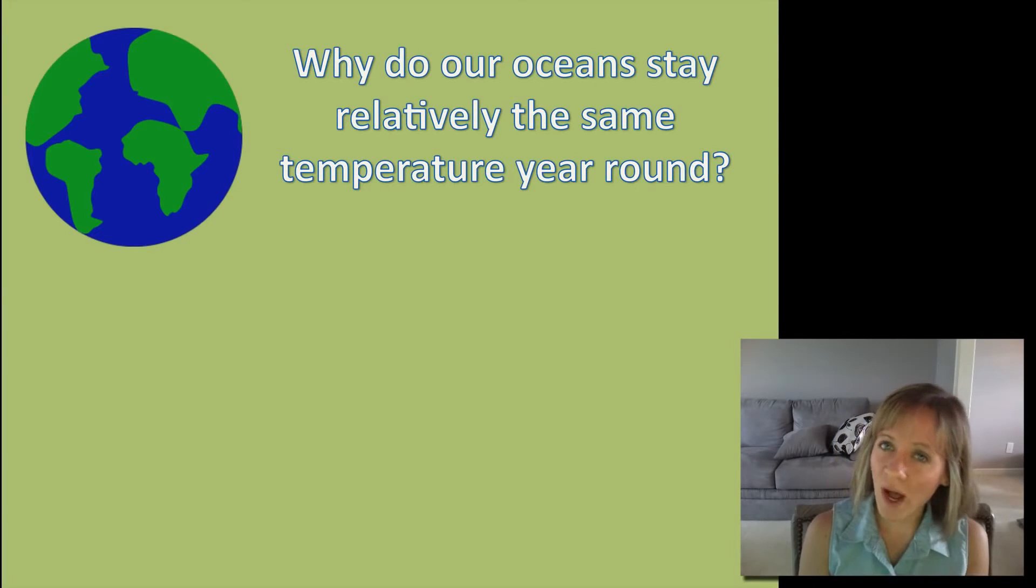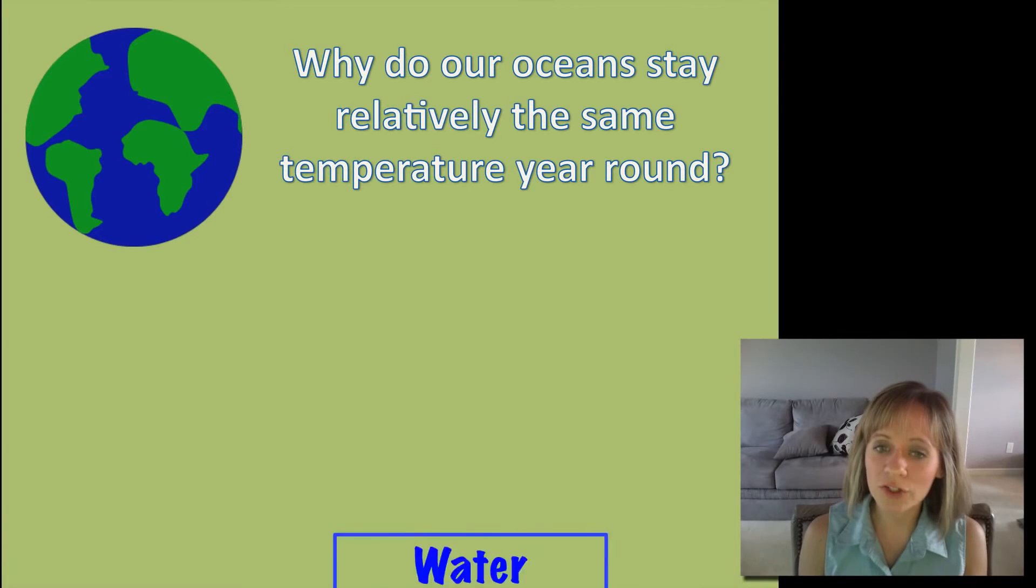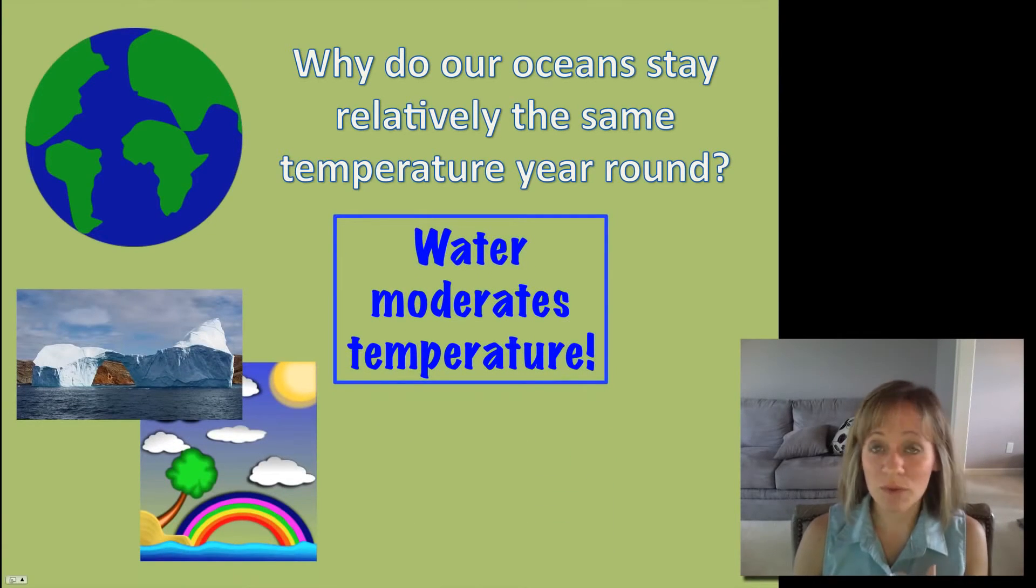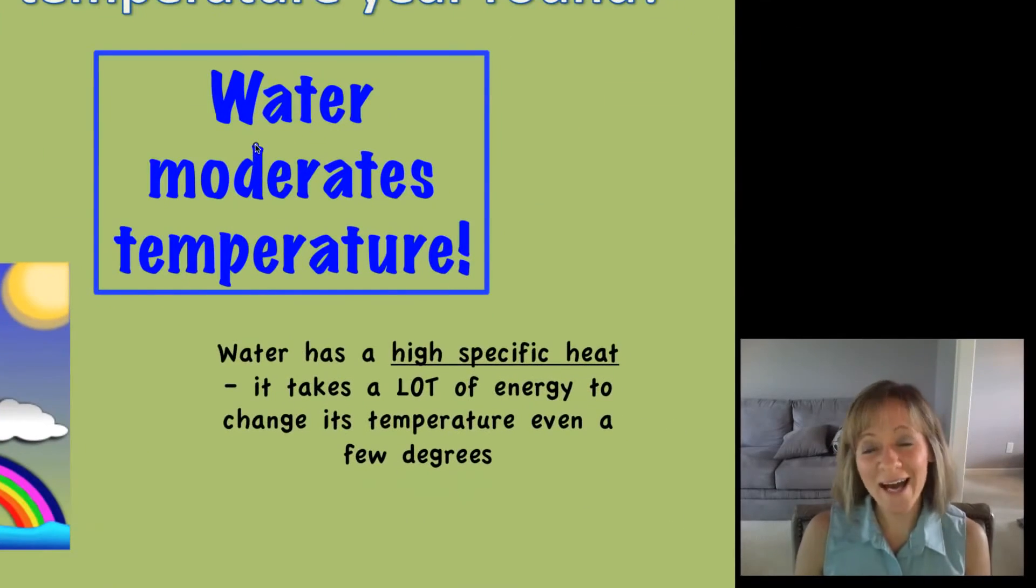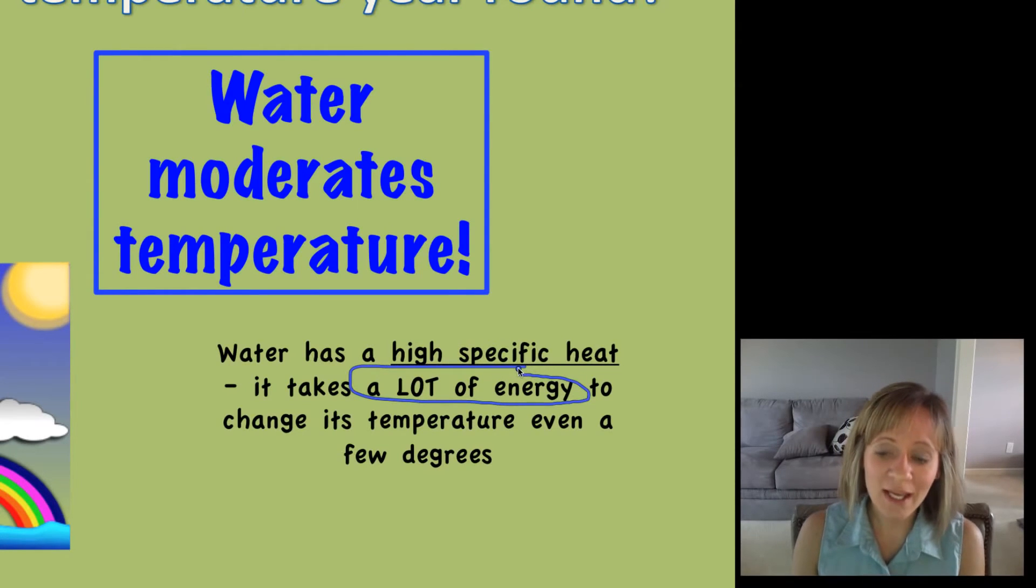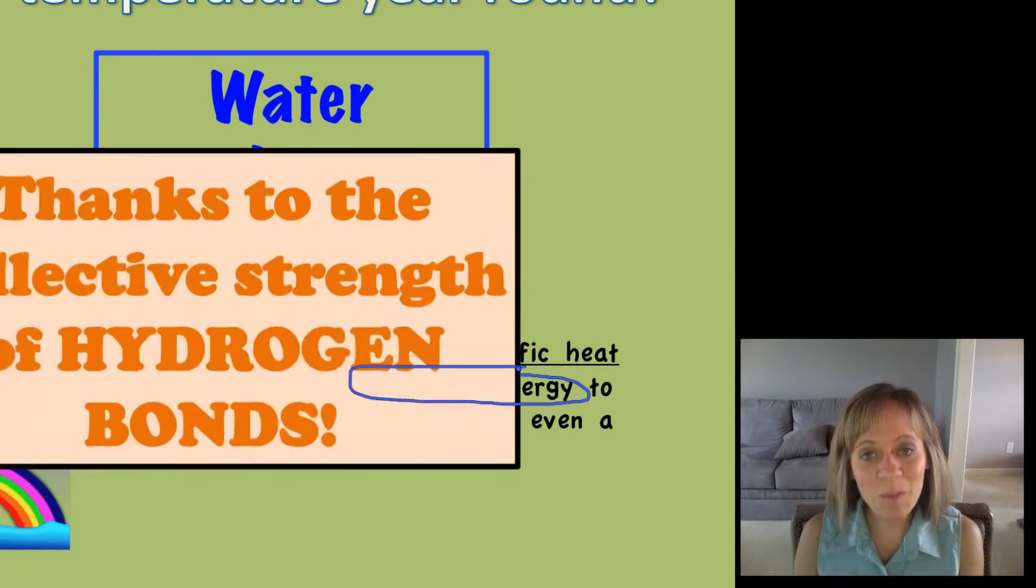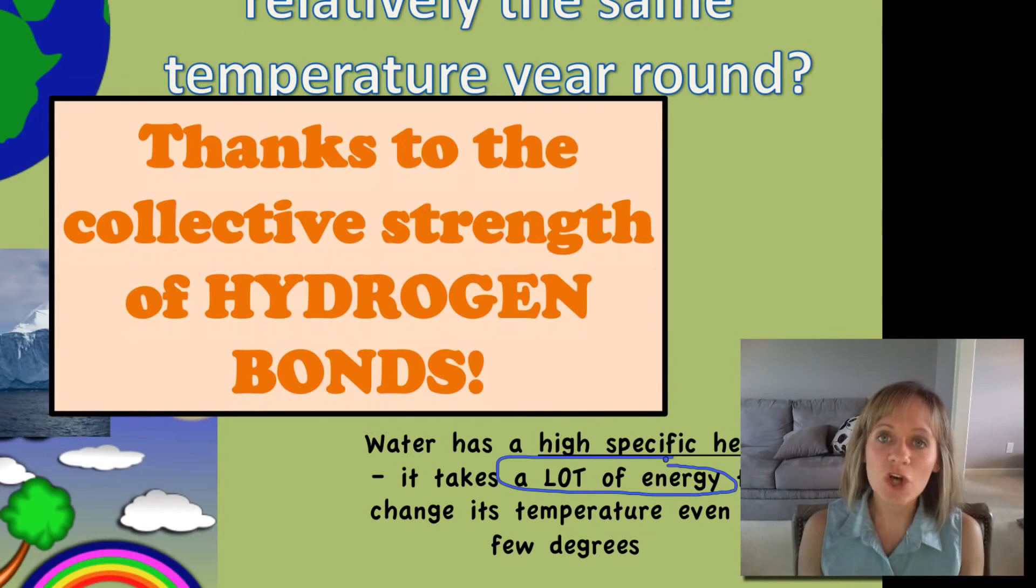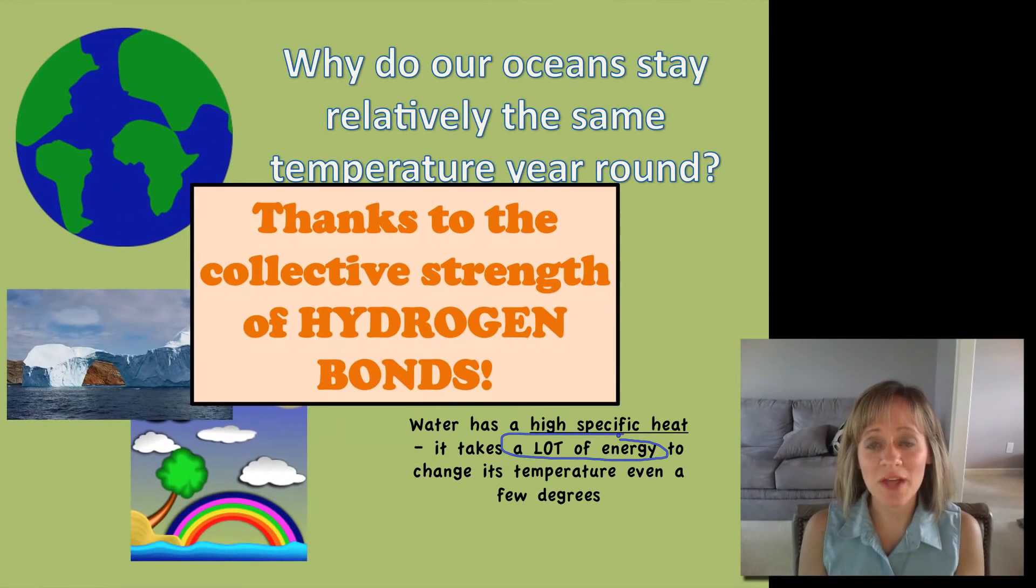Third, let's think about our oceans. Why do our oceans stay relatively the same temperature all year round, whether it's winter time with freezing temperatures or summer time when it's hot? The answer is water moderates temperature. The reason for this is that water has a high specific heat. This simply means it takes a ton of energy to even change water's temperature even just a few degrees. And why? The answer goes back to those hydrogen bonds. It is so hard to break that collection of hydrogen bonds in the ocean, it takes a lot of energy to do that.